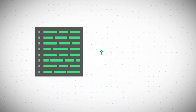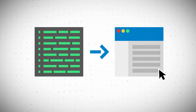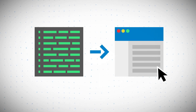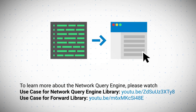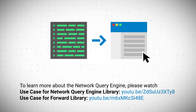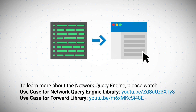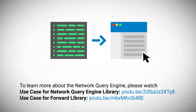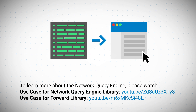In closing, Forward Networks can help your organization unlock the ability to quickly and easily convert your network data into actionable information. If you would like to see how your automation efforts can be simplified by the Forward Networks Network Query Engine, check out the quick demo at the link provided below. Thank you for joining the presentation today.